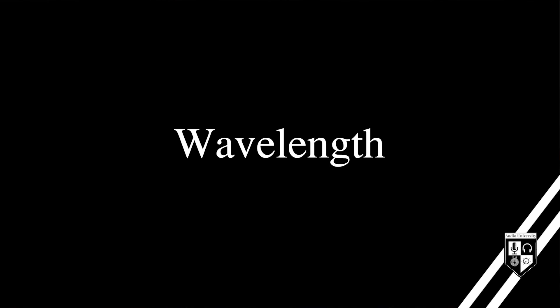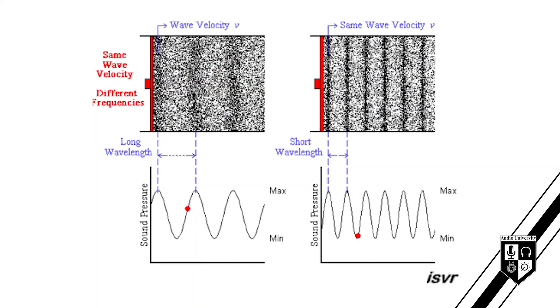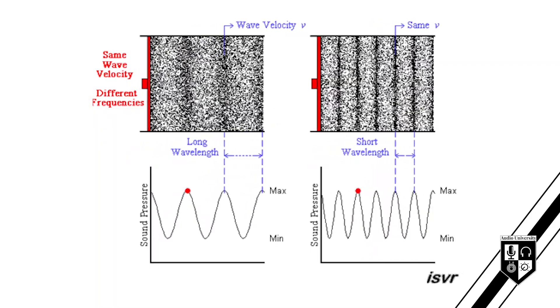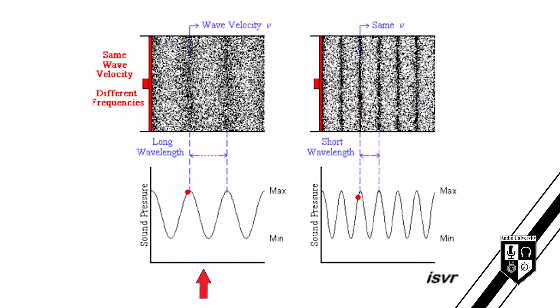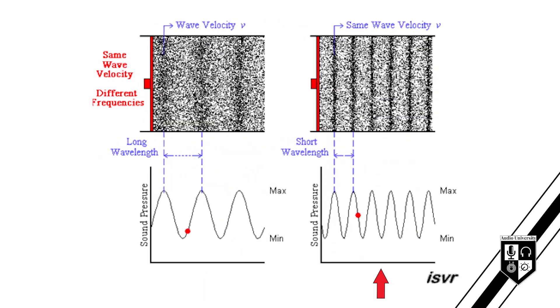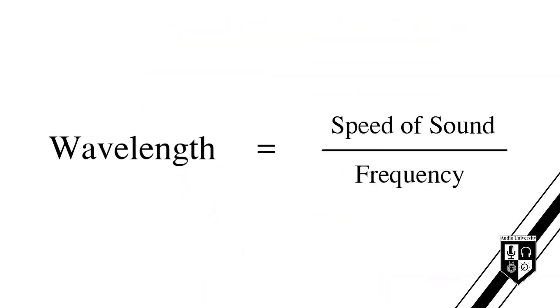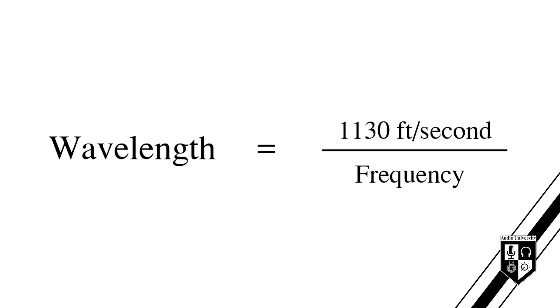Wavelength and period are very often confused, but they're different. Period is a measurement of time; wavelength is a measurement of distance. Wavelength describes the physical distance it takes a sound wave to complete one cycle. Here's an animation created by ISVR — I've linked to it in the description — which is really helpful in showing the relationship between frequency and wavelength. Lower frequencies have longer wavelengths, whereas higher frequencies have shorter wavelengths. To calculate the wavelength of a given frequency, use this formula: speed of sound divided by frequency. Using the standard 1,130 feet per second as the speed of sound will give you a very close to accurate result.